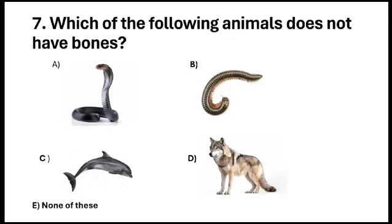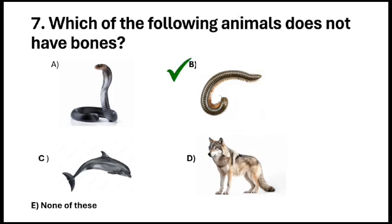Question number 7. Which of the following animals does not have bones? Option A. Snake. Option B. Millipedes. Option C. Dolphin. Option D. Wolf. So the answer is option B.